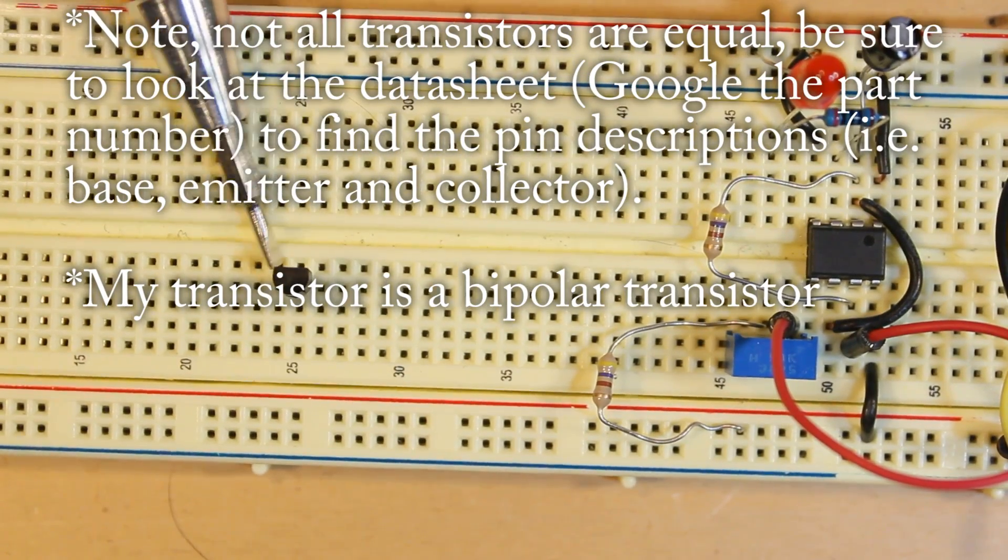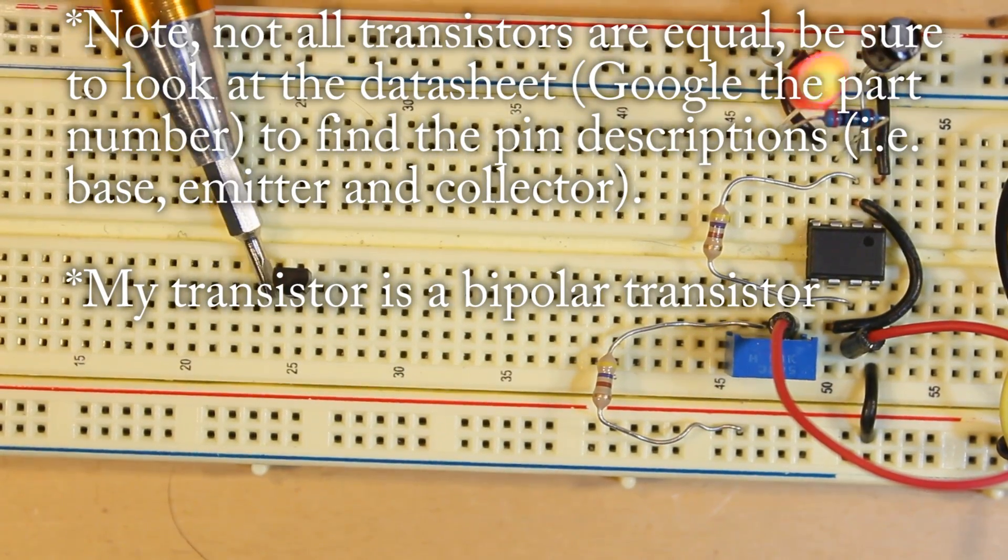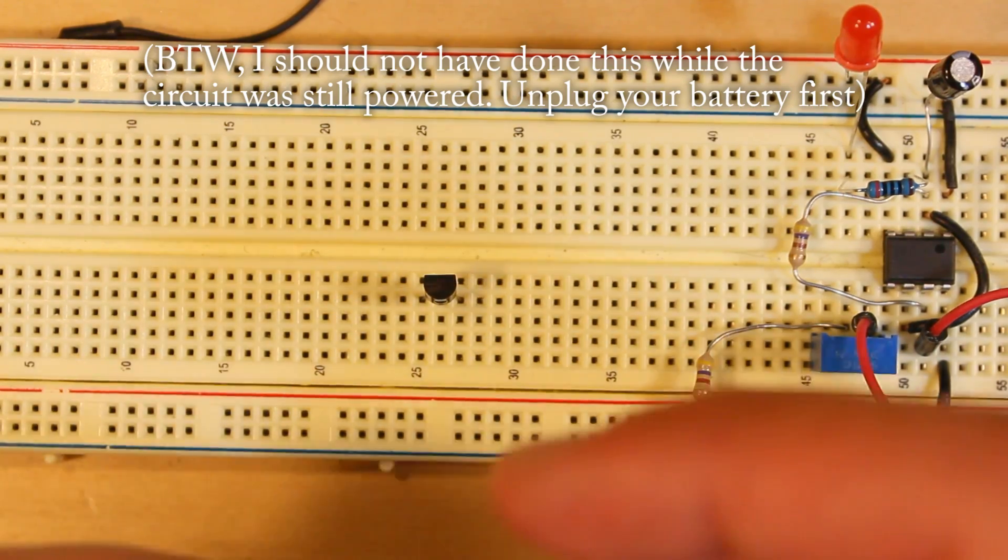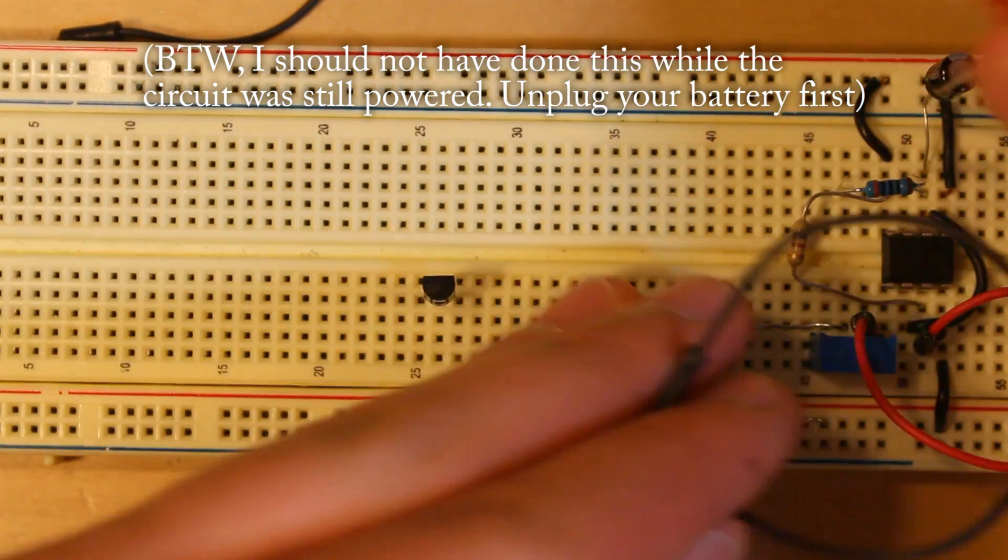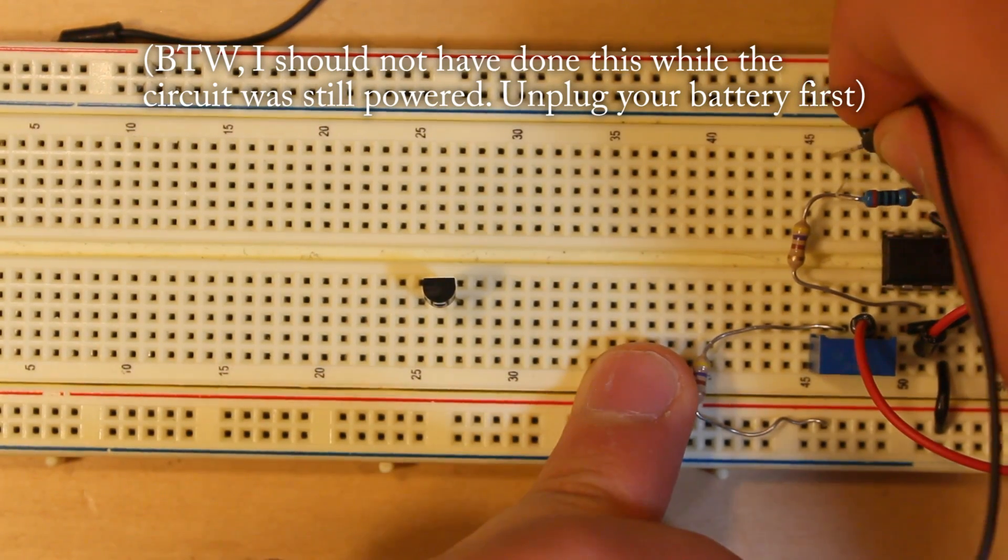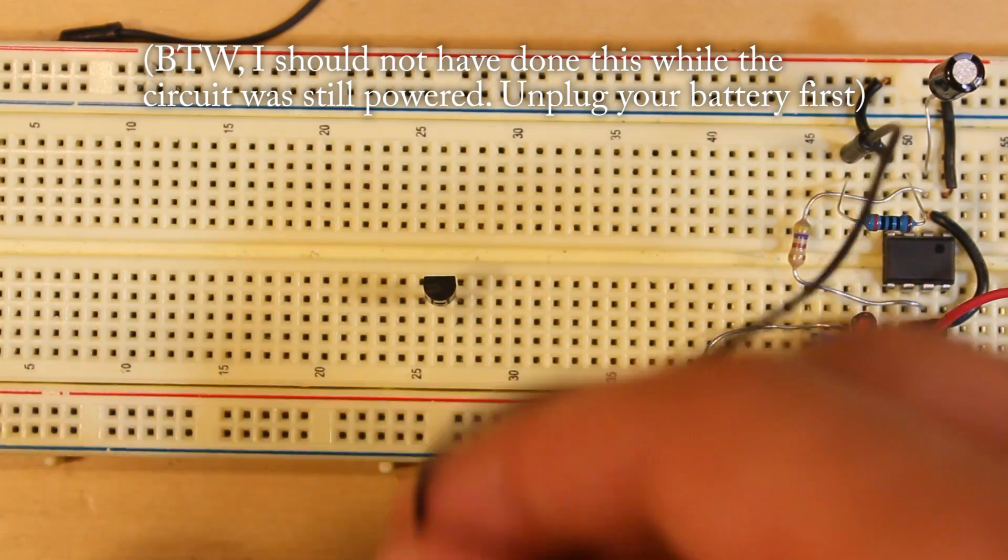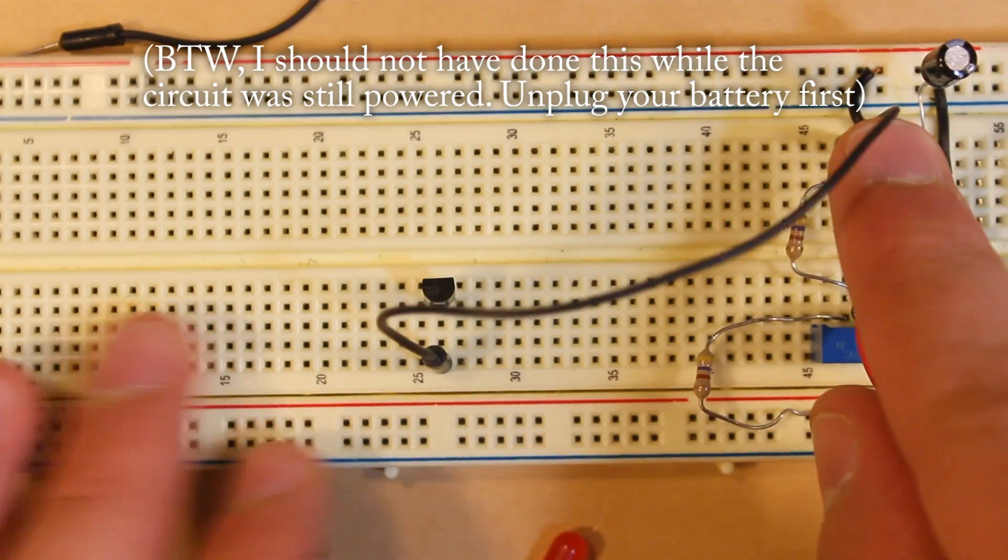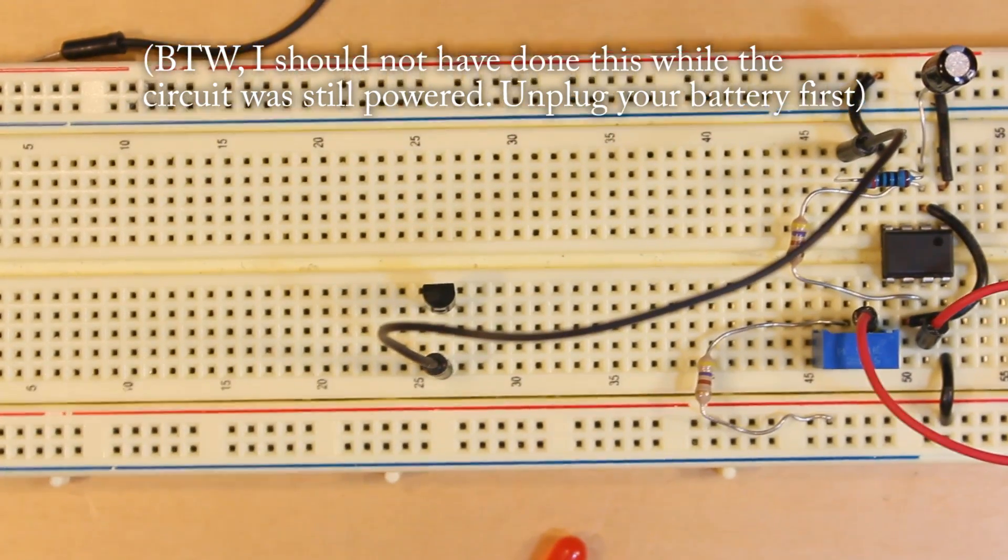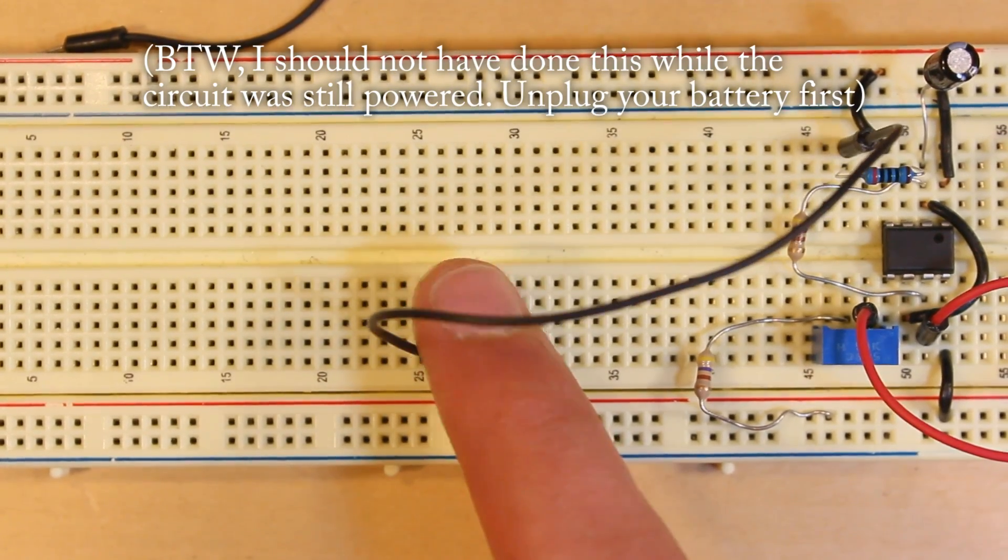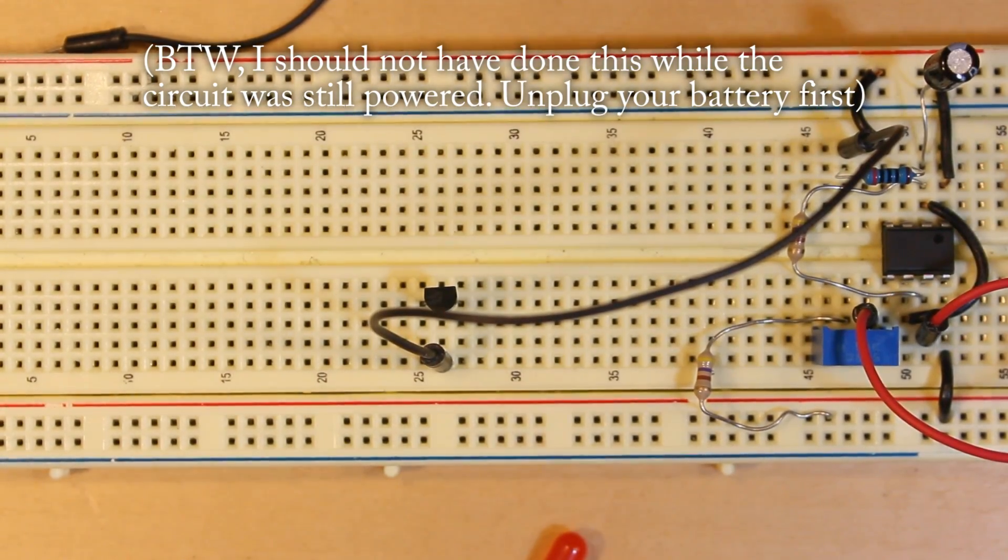This is the emitter. The pin to the right is the collector, and then the middle one is the base. Now what we're gonna do is take out our LED right there. We're gonna leave this resistor here and plug the base pin into the resistor. The reason we're leaving this resistor here is just for safety reasons - we don't want to accidentally draw too much current with the transistor and damage our timer.